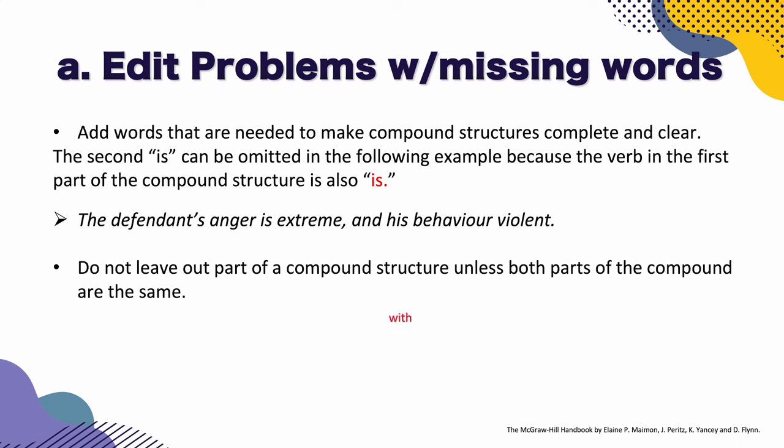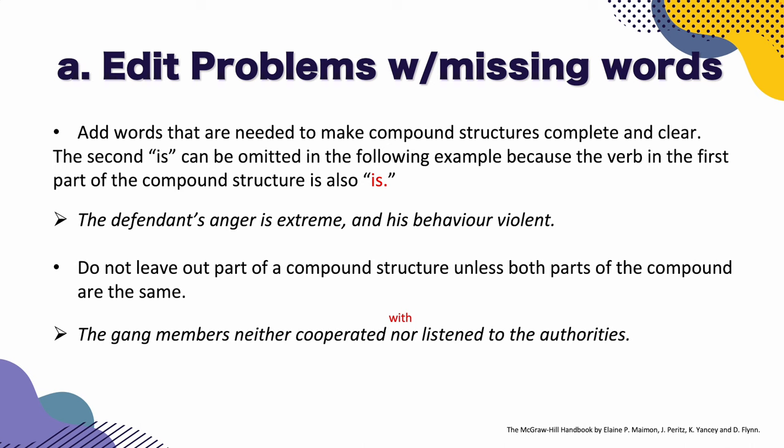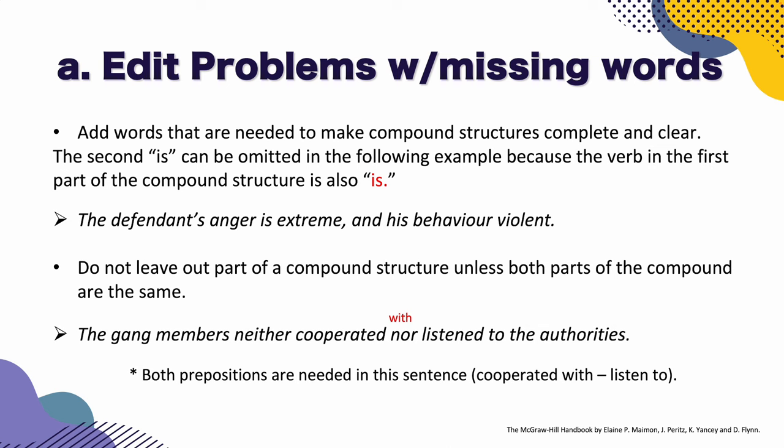For example: 'The gang members neither cooperated nor listened to the authorities.' We need the preposition 'with' because 'cooperated with' — and we need to add the preposition for 'cooperated' as well. Both prepositions are needed in this sentence: 'cooperated with' and 'listened to.'